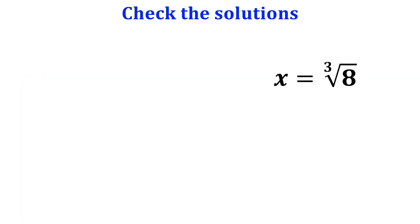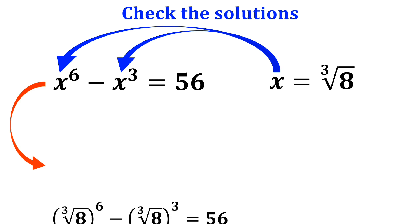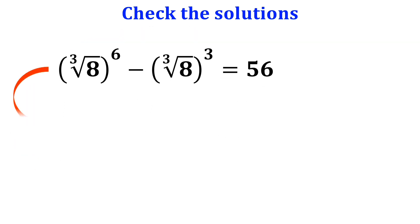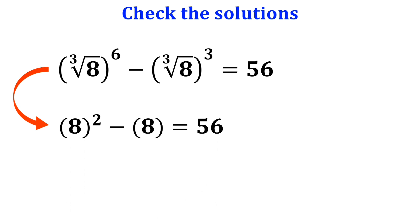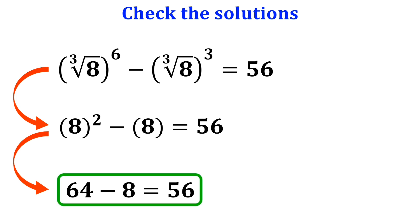Now let's check the second solution. We substitute the cube root of 8 for x in the original equation. This becomes (cube root of 8) to the power of 6 minus (cube root of 8) to the power of 3 equals 56, which simplifies to 8 squared minus 8 equals 56, and further to 64 minus 8 equals 56. Therefore, the second solution is also correct.